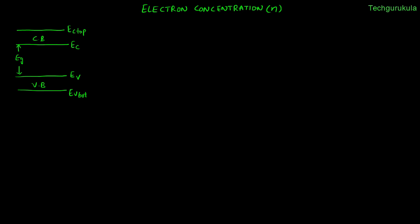To find the electron concentration in the conduction band, at each energy level E, if you know the number of states and the probability of that state being filled by electrons, then the total number of electrons at energy level E is given by the product of these two. To find the total electron concentration in the conduction band we need to add at each and every energy level. Since we assume energy levels are continuous — that's why we call it a band — we cannot directly add; instead we should be integrating.